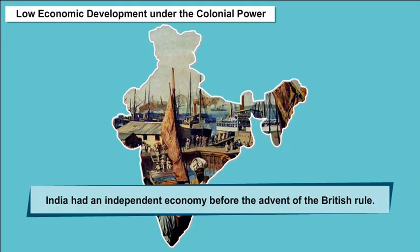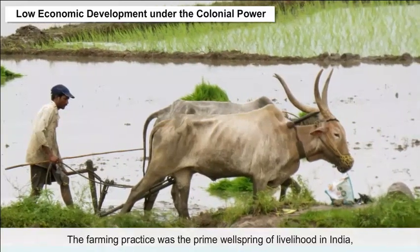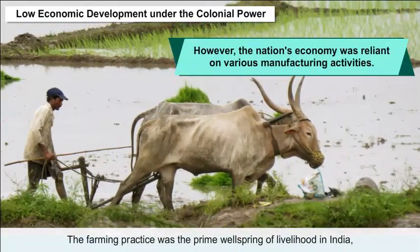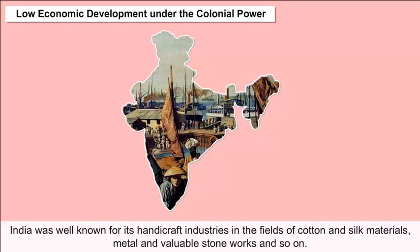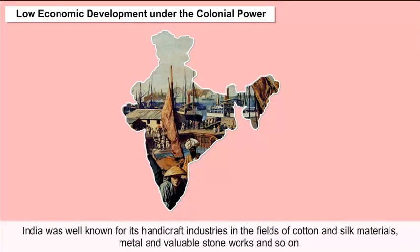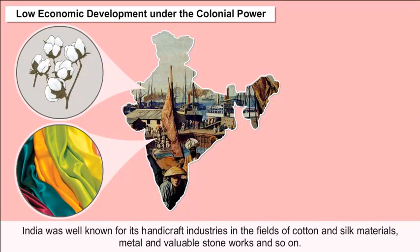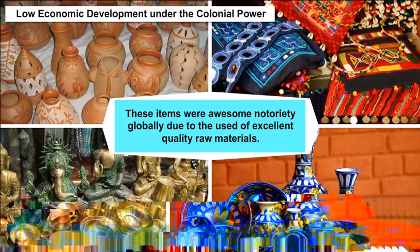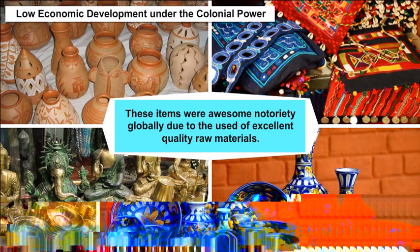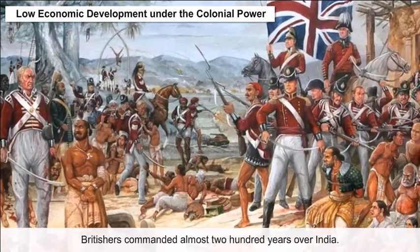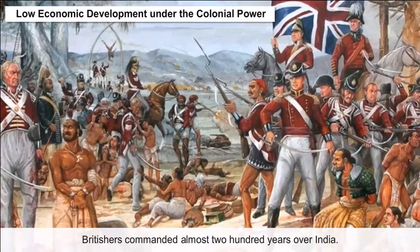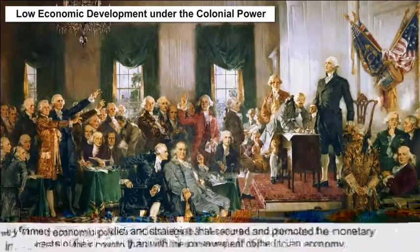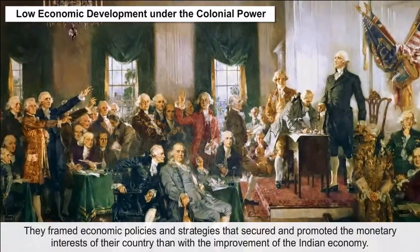India had an independent economy before the advent of British rule. Farming practice was the prime source of livelihood in India. However, the nation's economy was also reliant on various manufacturing activities. India was well known for its handicraft industries in the field of cotton and silk materials, metal and valuable stone works, and so on. These items had awesome notoriety globally due to the use of excellent quality raw materials.